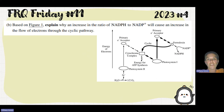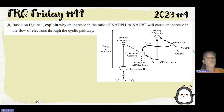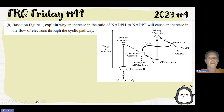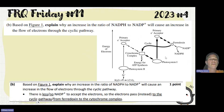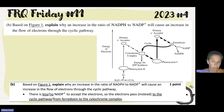Based on the figure, we have to explain why an increase in the ratio of NADPH to NADP+ will cause an increase in the flow of electrons through cyclic electron flow. If there's a lot of NADPH and not a lot of NADP+, there's nothing to accept and reduce those electrons, so we keep cycling through to continue generating ATP — because light keeps shining and electrons keep jumping up. Since there's no NADP+ to accept the electrons, electrons pass instead to the cyclic pathway, from ferredoxin to the cytochrome complex.